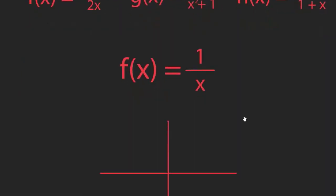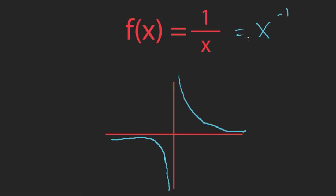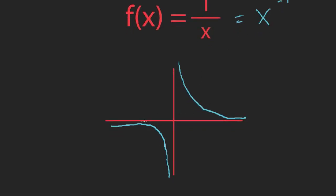Let's first look at a really simple one: f(x) equals 1 over x. Here's what the graph of this function looks like. The function is supposed to be symmetric. I want you to see that this has two asymptotes — a vertical asymptote at x equals 0 and a horizontal asymptote at y equals 0.